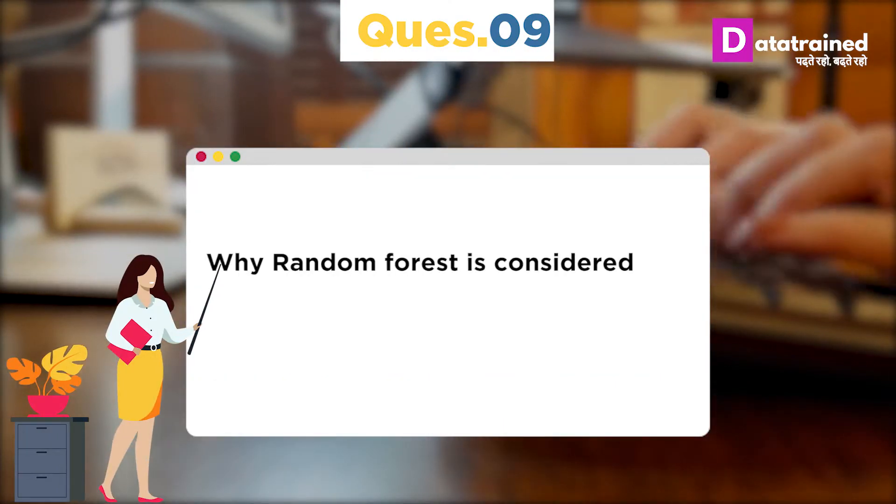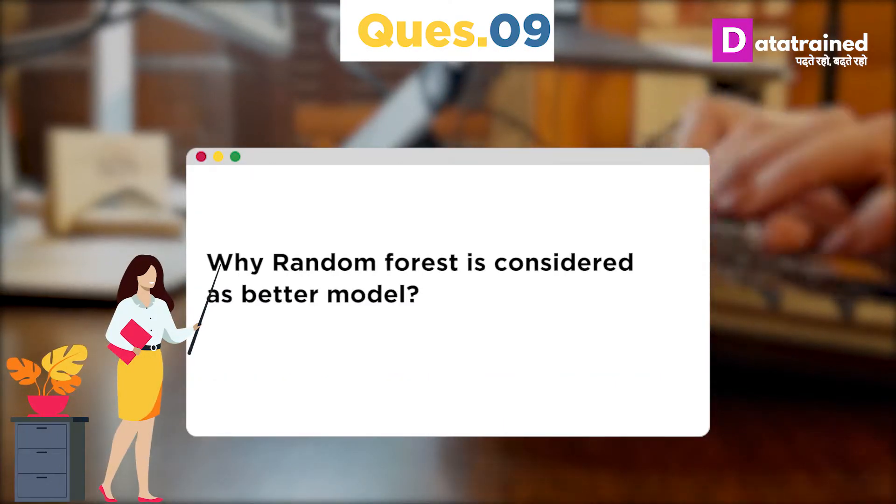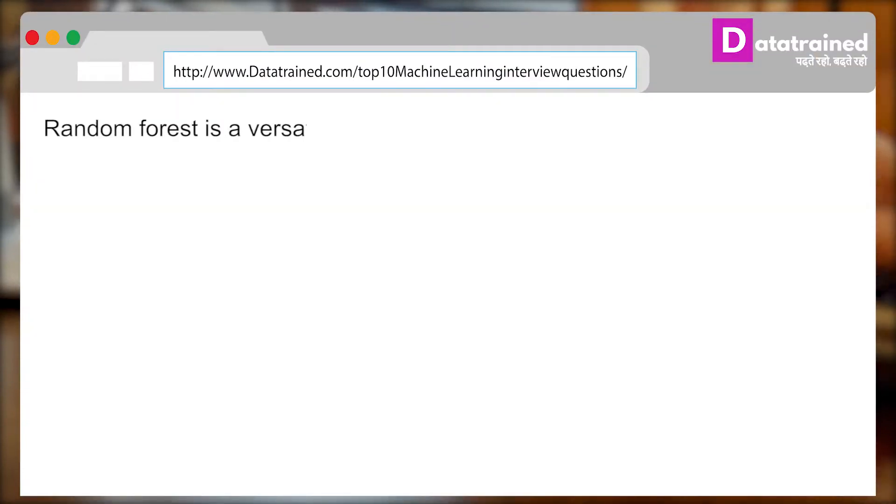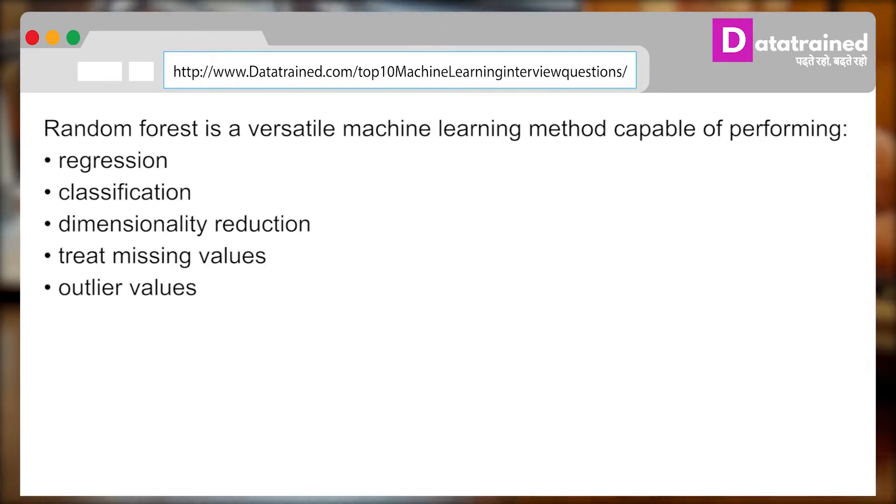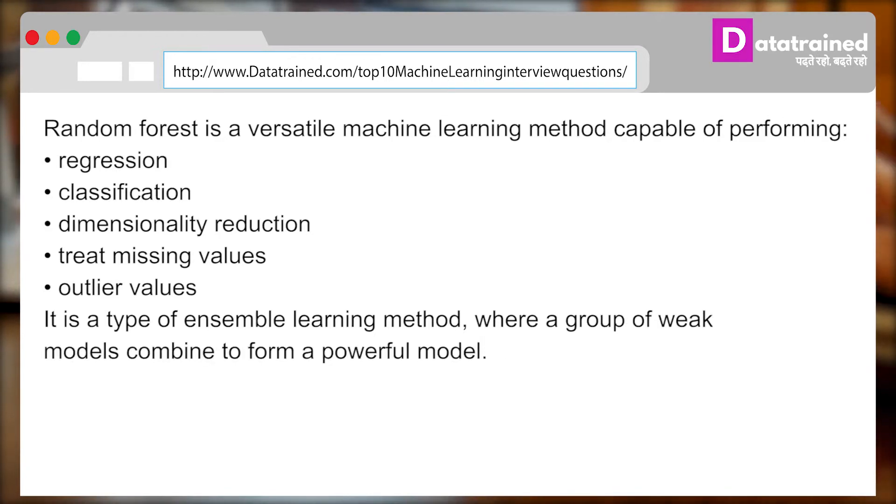Now, the next question can be: Why Random Forest is considered as a better model? Random Forest is a versatile machine learning method capable of performing regression, classification, dimensionality reduction, treat missing values, outlier values. It is a type of ensemble learning method where a group of weak models combine to form a powerful model.